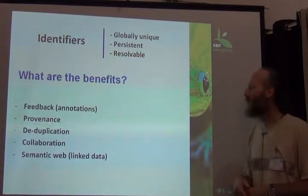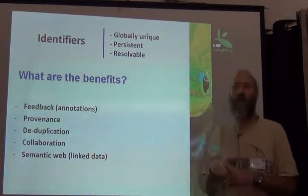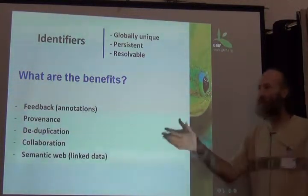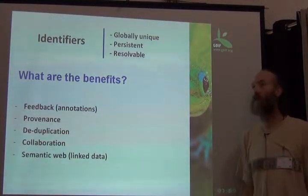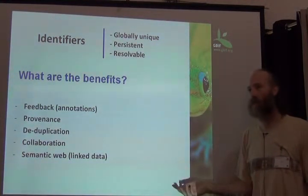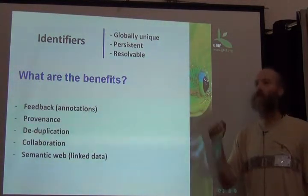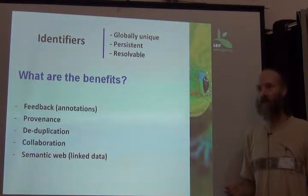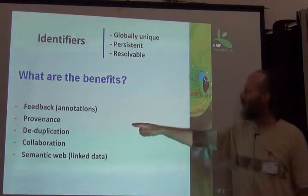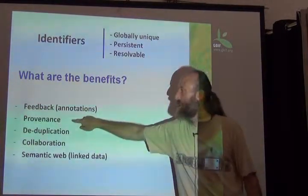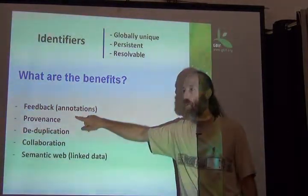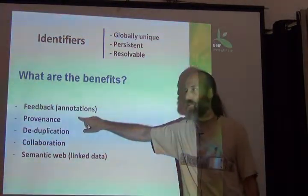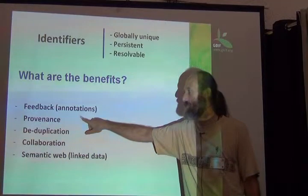In this way, it's actually useful that your data get shared in more places and more places. The more places that it is, the better. It means more people are seeing it, more people are using it, and your museum becomes more relevant. The important thing with the identifiers is that they know where it came from — they know where the primary source is. It's you.